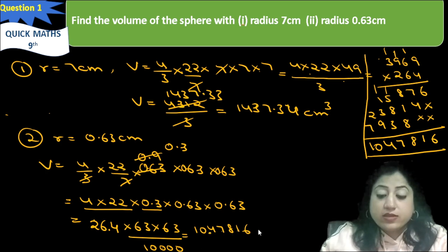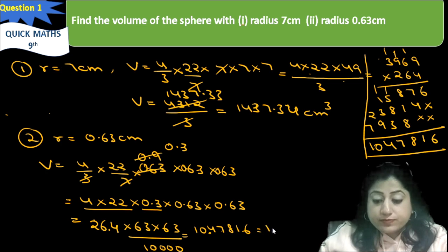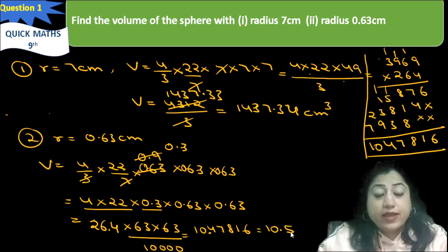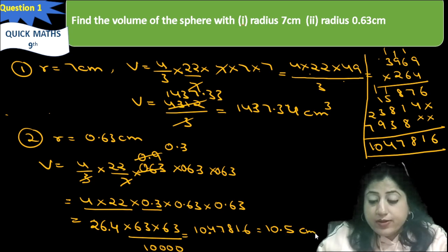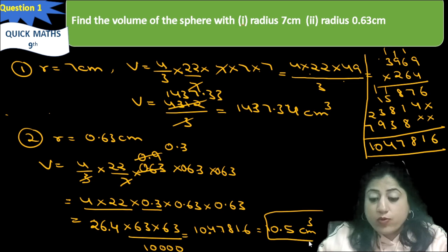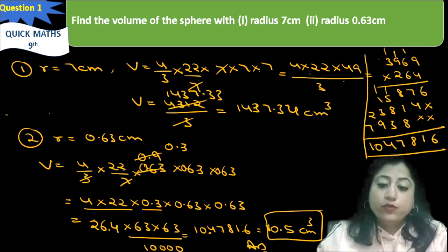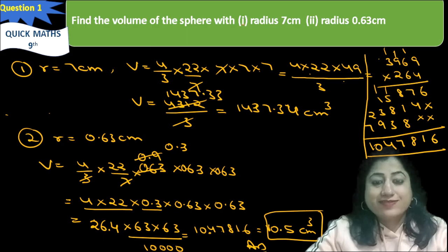The result is approximately 10.5 centimeter cube. So 10.5 centimeter cube is the answer for the volume for the second part. Thank you.